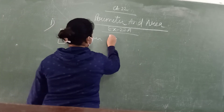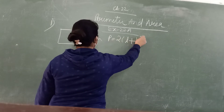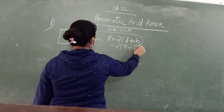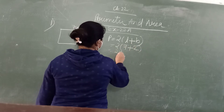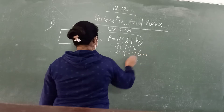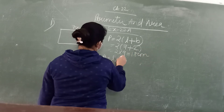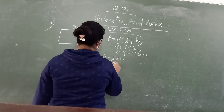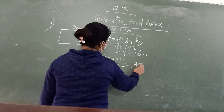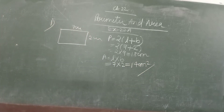The perimeter is 2(L plus B). In place of L we write 7, and B is 2. So 2 into 9, this is 18 centimetres. And the area is L into B — in place of L is 7, B is 2 — this is 14 centimetres square. This is the area and perimeter.